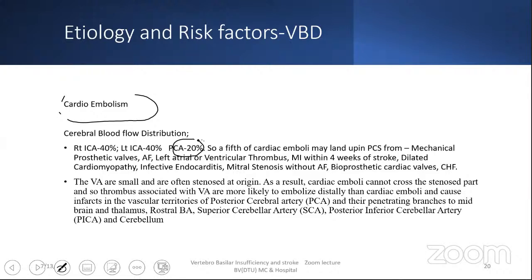An important point: vertebral arteries are very small and often stenosed at the origin. As a result, cardiac emboli cannot cross the stenosed part, so thrombus associated with vertebral artery disease is more likely to embolize distally than cardiac emboli. Vertebral artery thrombi beyond V1 embolize distally. In the NEMC-PCR registry (477 cases) by Dr. Kaplan and the Helm Stroke Registry (591 cases), cardiac or artery-to-artery embolism accounts for 40%; cardiac alone 24%. Small vessel disease accounted for 33% in the Helm Stroke Registry.